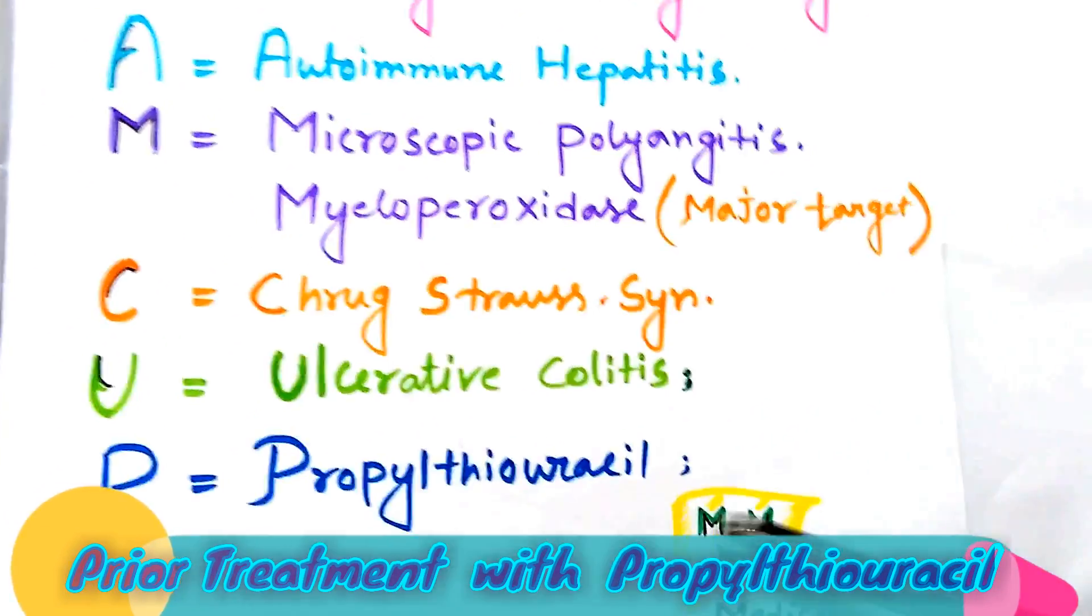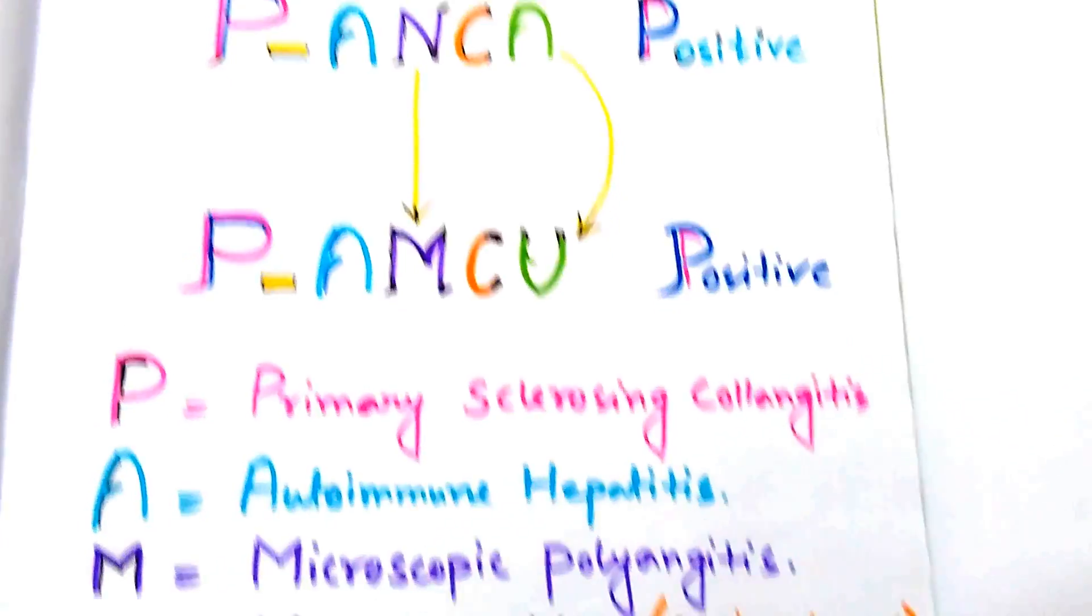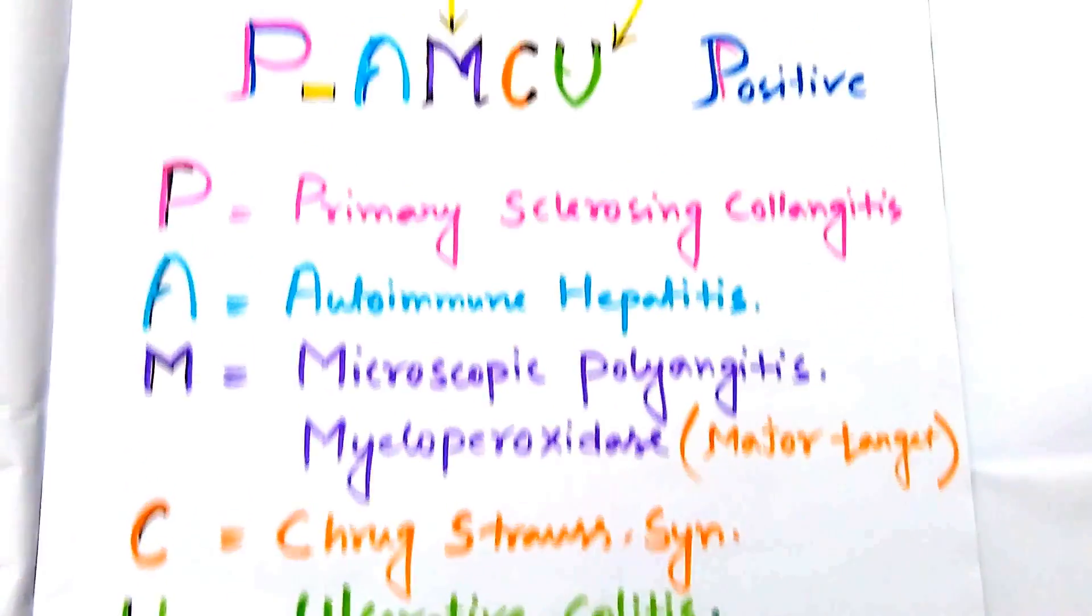Now the positive P for propylthiouracil. So friends, our mnemonic is finished.